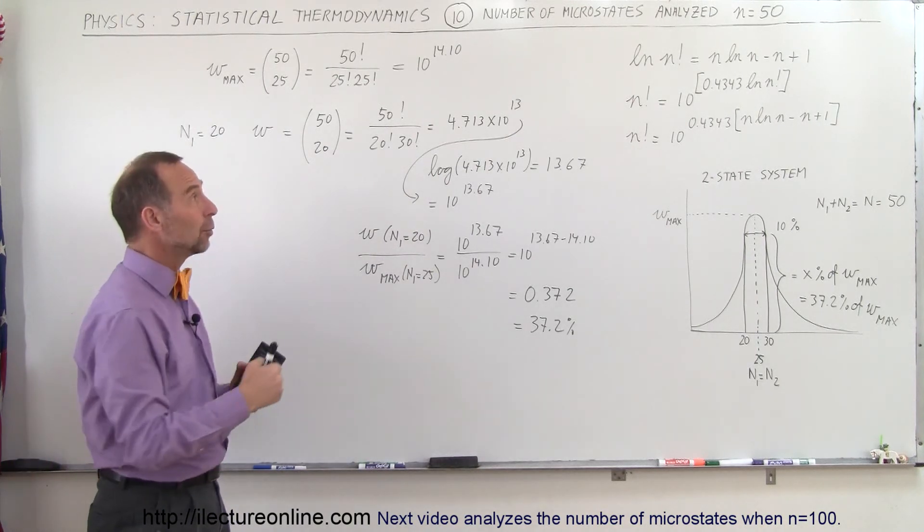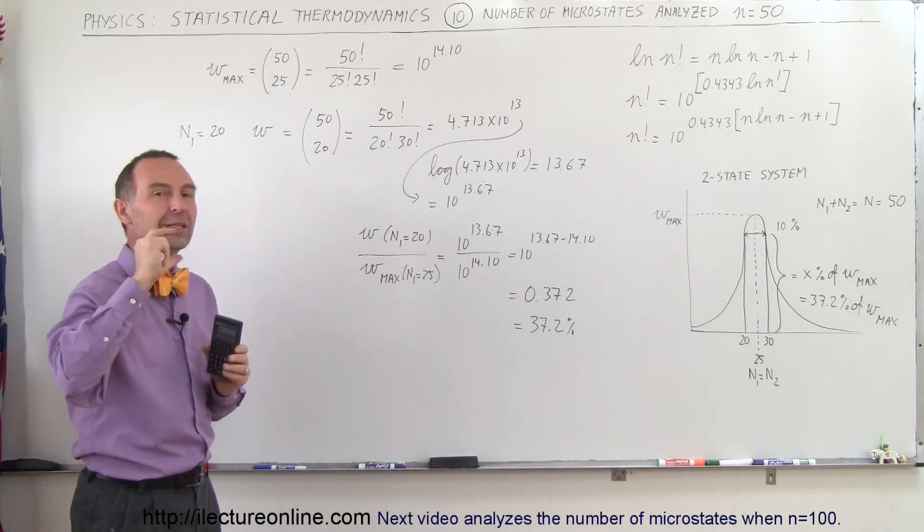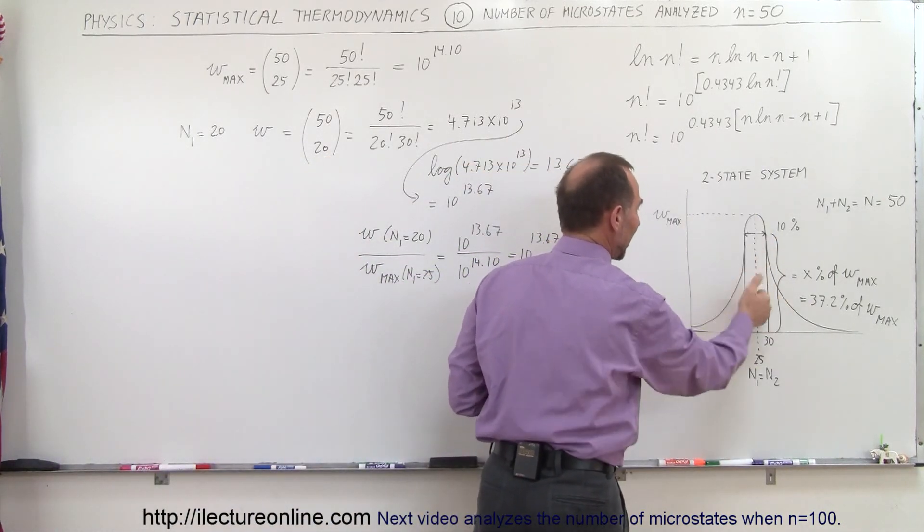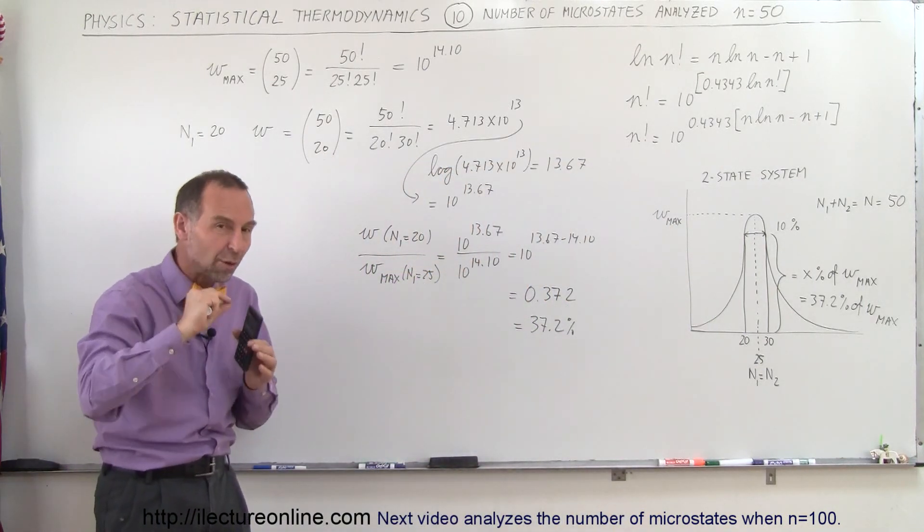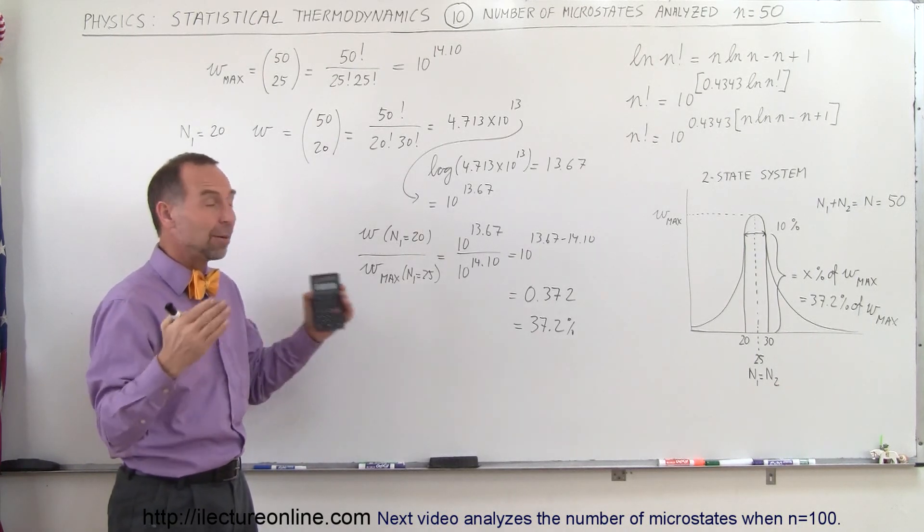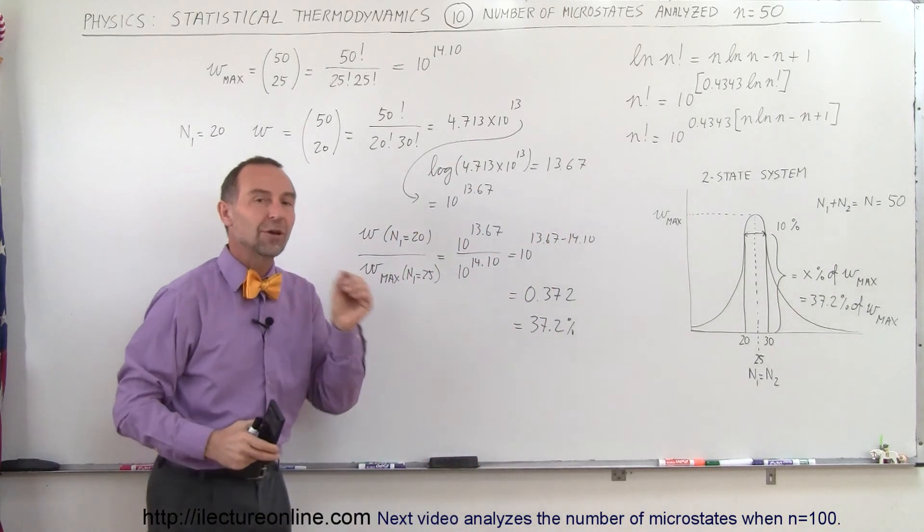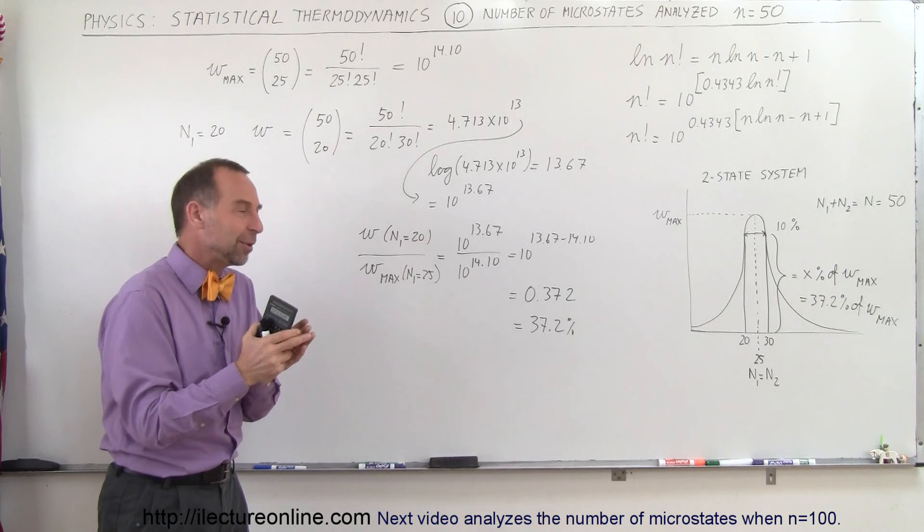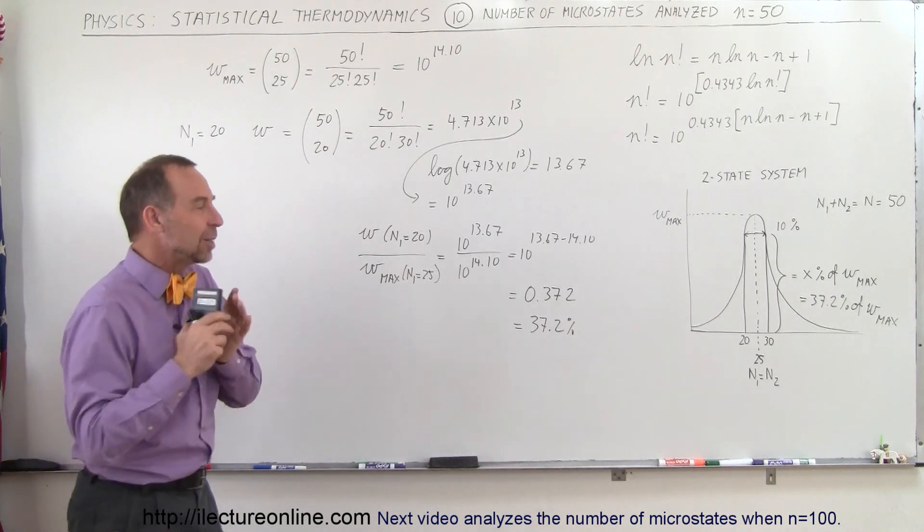And so we'll do that again. Now we'll use an example N equals 100 or N equals 1,000, and you can see how that curve continues to narrow, where the height of the curve when you're 5% out from the central maximum, where the maximum number of microstates occur will be a smaller and smaller and smaller value relative to that, which seems to indicate then that as the number grows in size, the probability that you'll be much closer to N1 equals N2, where the number of objects of the population belonging in one state being equal to the number of objects in the population belonging in the other state equal each other.